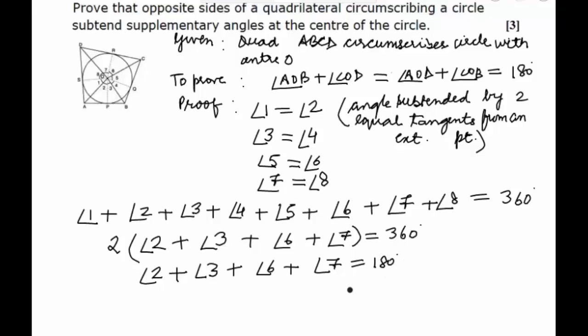So now if we look in the figure, angle 2 plus angle 3 gives us angle AOB, and angle 6 plus angle 7 gives angle COD. This is equal to 180 degrees. Hence, we have proved the first part of our problem: that the angles subtended by side AB and side CD are supplementary.